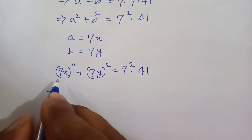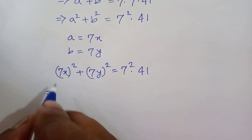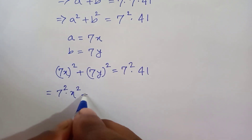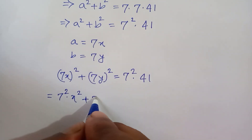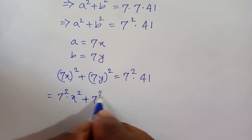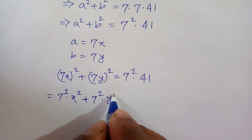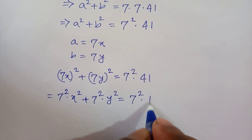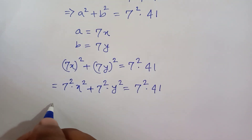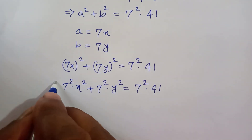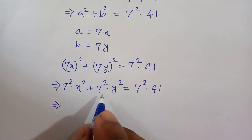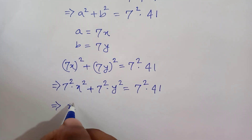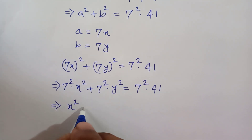So 7² times x² plus 7² times y² is equal to 7² times 41. Now dividing both sides by 7 squared, we get x squared plus y squared is equal to 41.